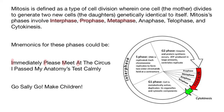'At' starts with A — that means anaphase goes next. 'The' starts with T — that means telophase. And the last one is 'circus,' starting with C — that means cytokinesis.